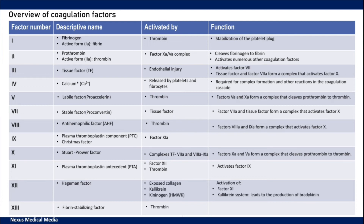Factor 13 is activated by thrombin and its function is to stabilize the fibrin network by producing crosslinks.